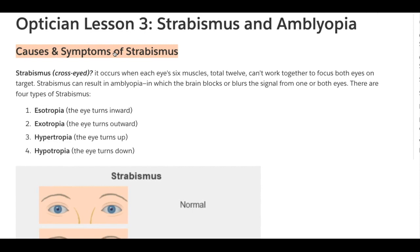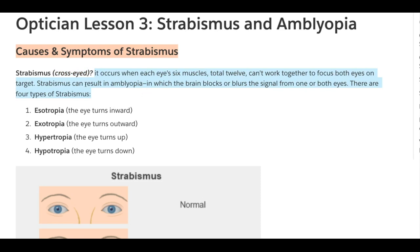Strabismus is a condition often referred to as cross-eyed, though that term is not often used in medical settings because patients don't like it. It occurs when each eye's six muscles — twelve total — can't work together to focus both eyes on a target. Strabismus can result in amblyopia, in which the brain blocks or blurs the signal from one or both eyes.